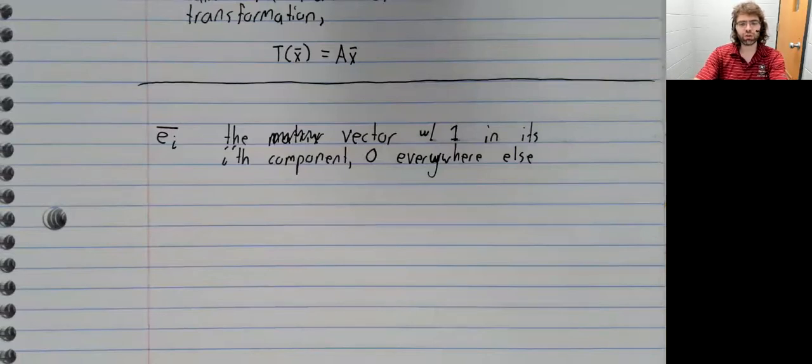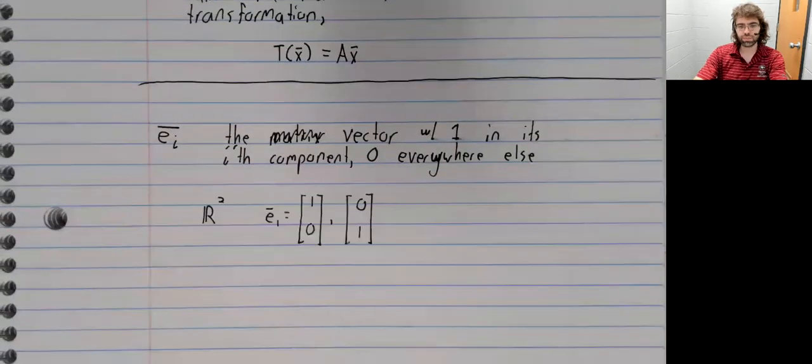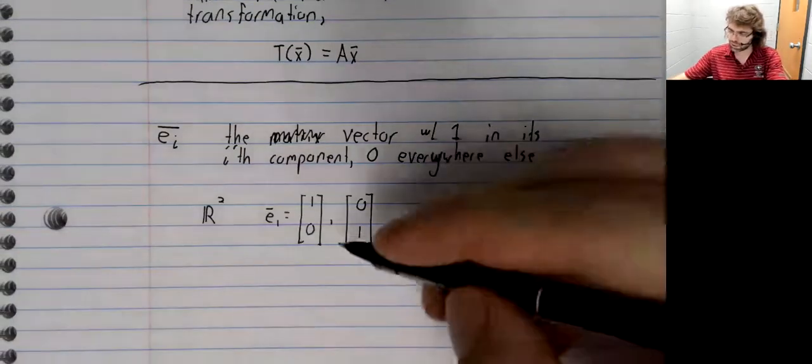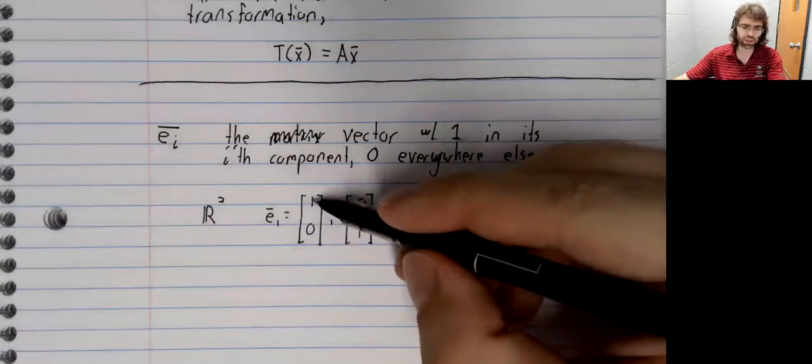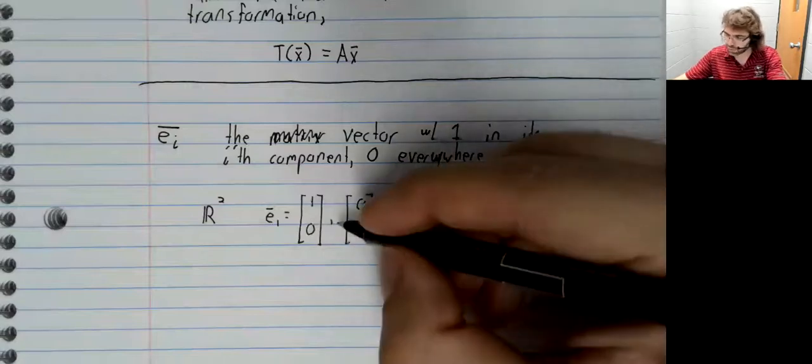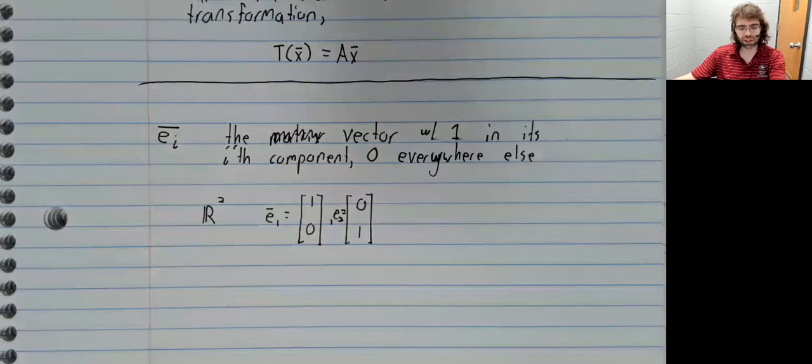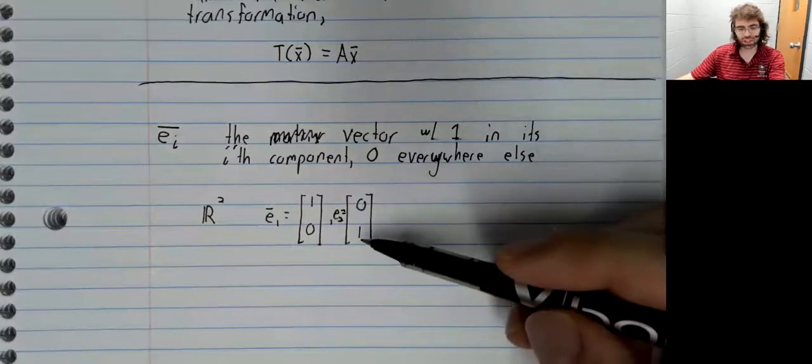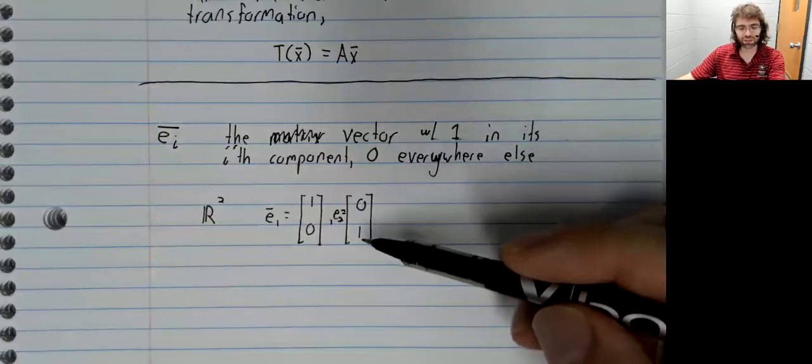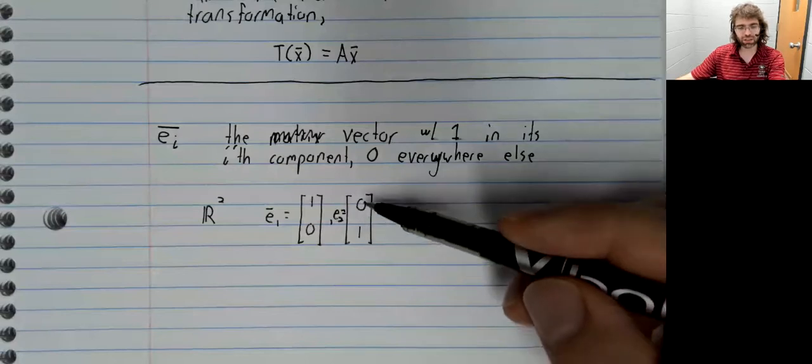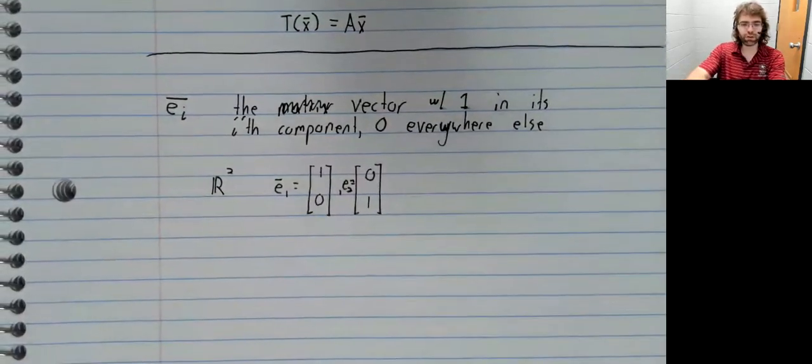So in R two, e sub one has one in the first location, zero everywhere else. And we have e sub two, which has one in its second location, zero everywhere else.